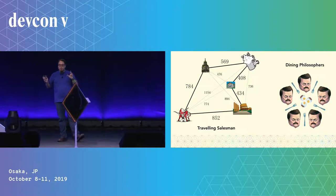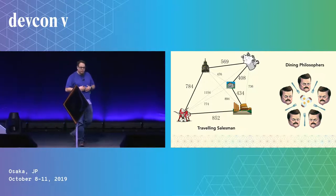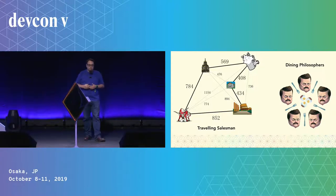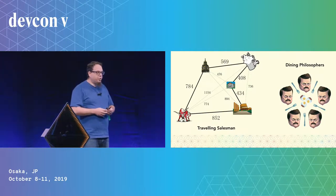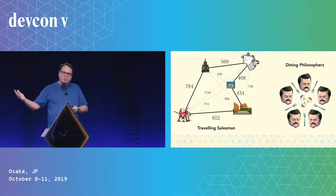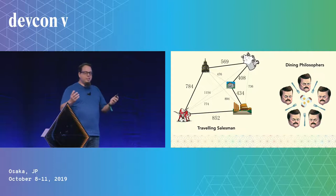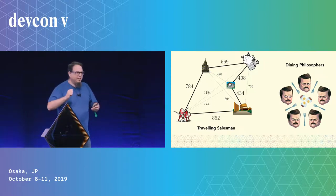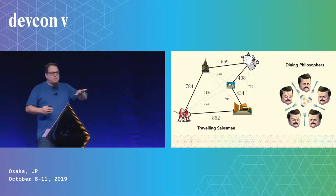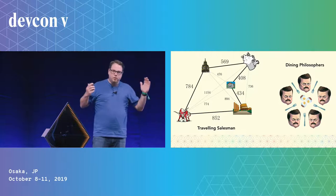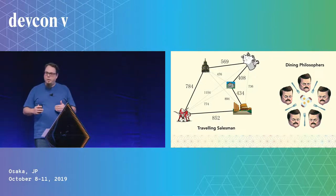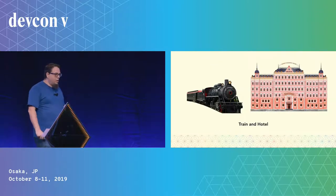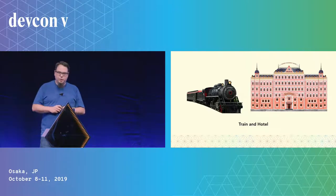In computer science we like to have toy versions of abstract problems because it makes it easier for us to think through them. Everyone in this room is familiar with the Byzantine generals problem. Probably the most famous is the traveling salesman problem. My personal favorite is the dining philosophers problem, which asks you to imagine a group of philosophers eating dinner together who can't eat unless holding a fork in each hand, and they're sharing forks. We create these toy stories because the problems are so abstract they're hard to reason about, but they let us use human intuition.